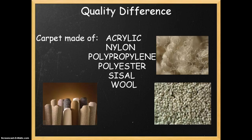Quality difference is based on what the carpet is made of. The most common materials are acrylic, nylon, polypropylene, polyester, sisal, and wool. Acrylic is one of the first synthetic fibers successfully used in carpet production and has several of the same characteristics as wool. It's also resistant to chemicals and not affected by sunlight, where other materials may fade.